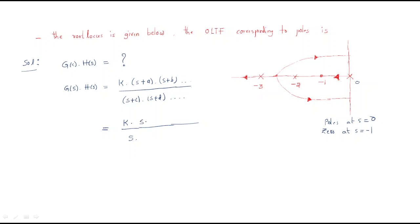We have one zero at s = −1 and one pole at s = 0, so we write (s + 1) for the zero and s for the pole. Next, looking at minus two and minus three, we can see two poles with the root locus flowing in a particular direction. That means we have a pole at s = −2 and another pole at s = −3, giving us factors (s + 2) and (s + 3).